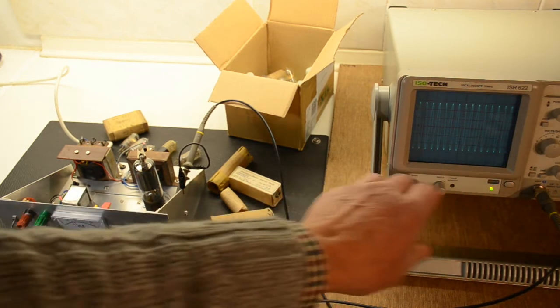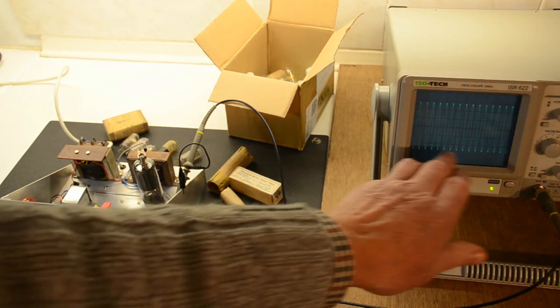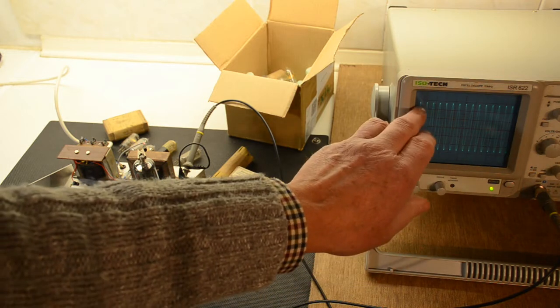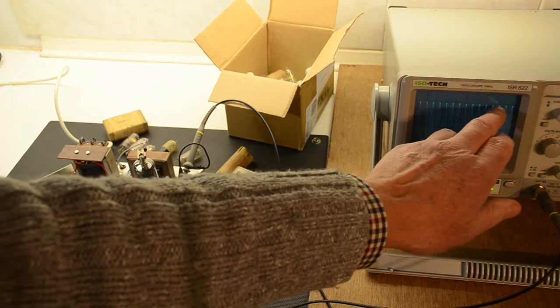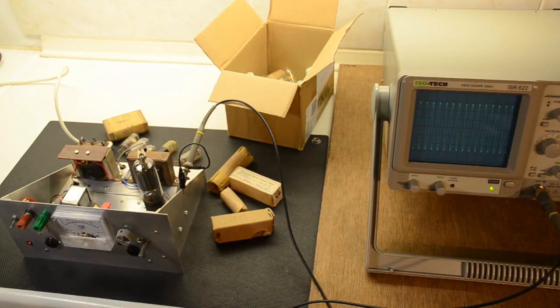The horizontal deflection is 100 nanoseconds per division, which means very roughly we can count 1, 2, 3, 4, 5, 6, 7, 8, 9, 10, 11, 12, 13, 14, 15, round about 15 meg, in fact slightly over 15 meg, which is actually what it should be. So there we go.